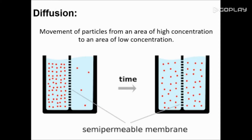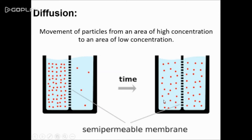Diffusion is defined as the movement of particles from an area of high concentration to an area of low concentration. On the left side of our membrane we have more red molecules compared to the right. Through diffusion, the molecules on the left, an area of high concentration, move to the right side — an area of low concentration — eventually resulting in an equal number on both sides. This process of diffusion is passive in that it does not require energy.